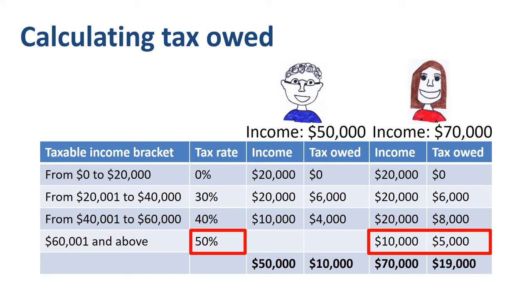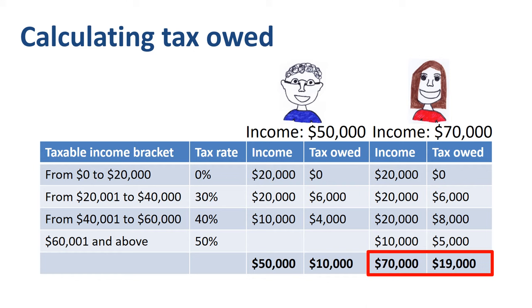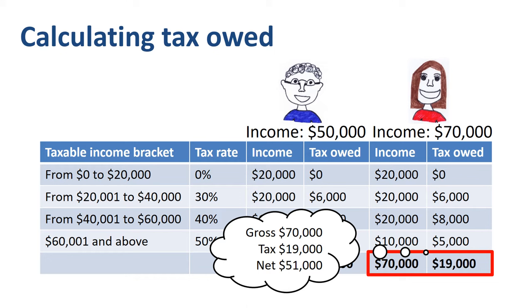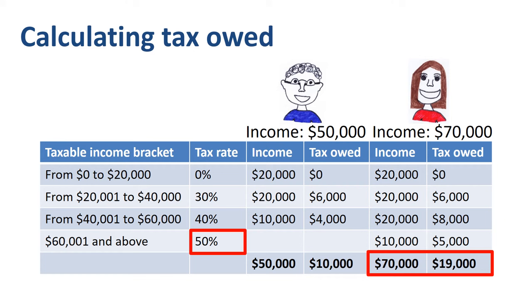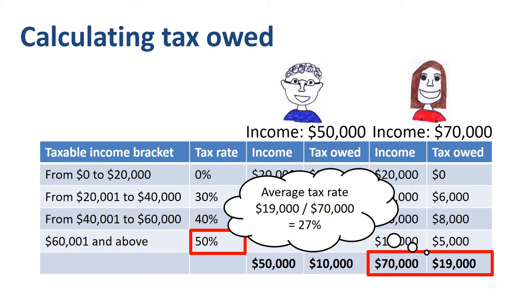Jane owes $19,000 in taxes on a $70,000 taxable income. Her gross income is $70,000, her net income is $51,000. Jane's marginal tax rate is 50%. She would pay $0.50 additional tax on one additional dollar of income. Jane's average tax rate is the $19,000 tax owed divided by her gross income of $70,000, which is 27%.